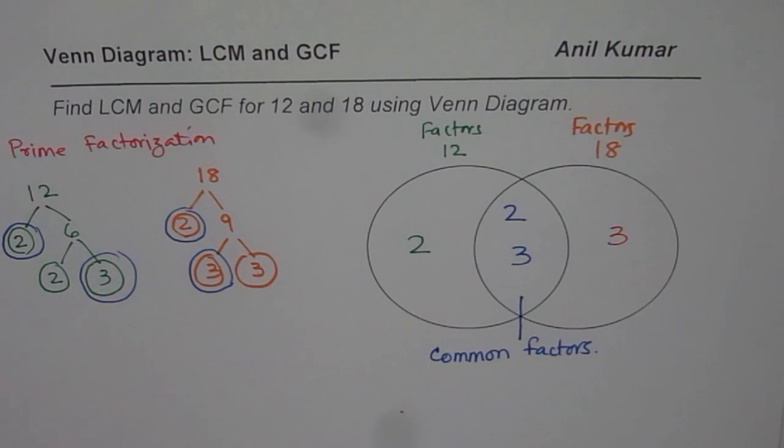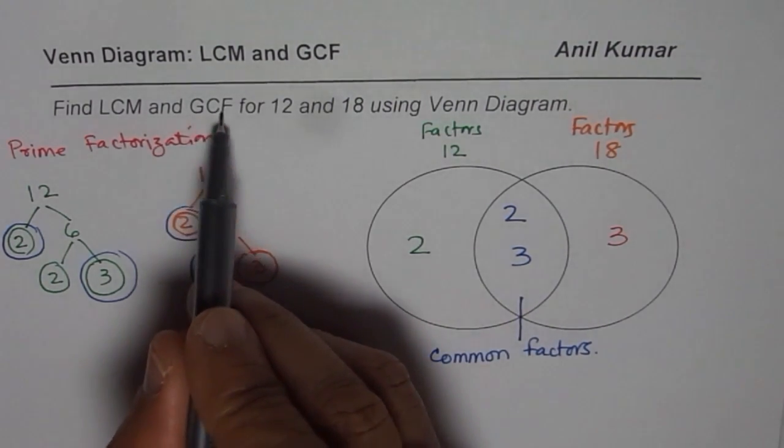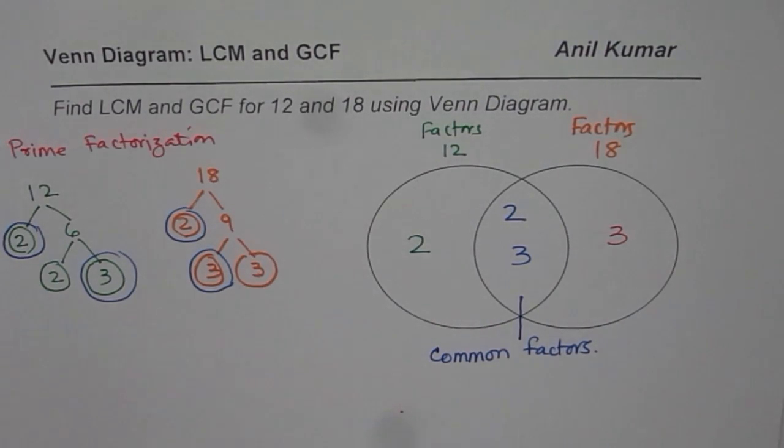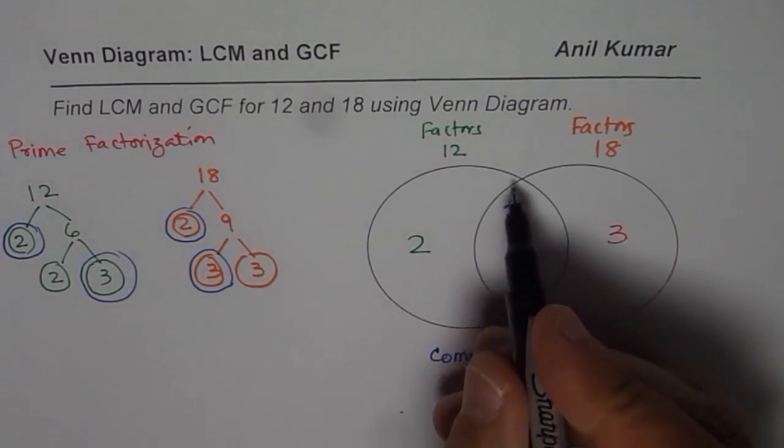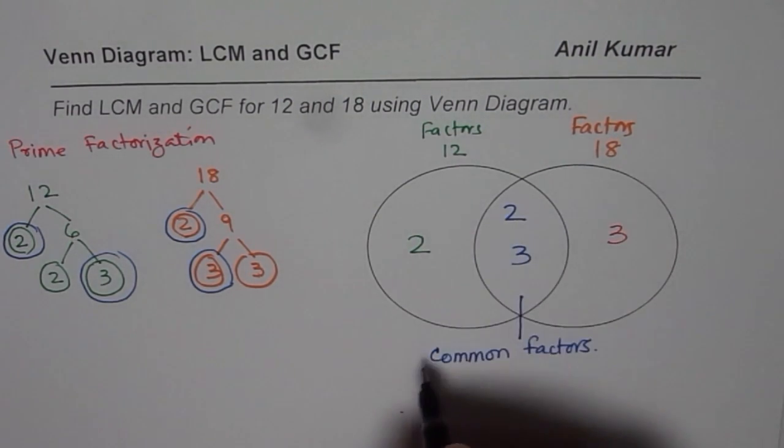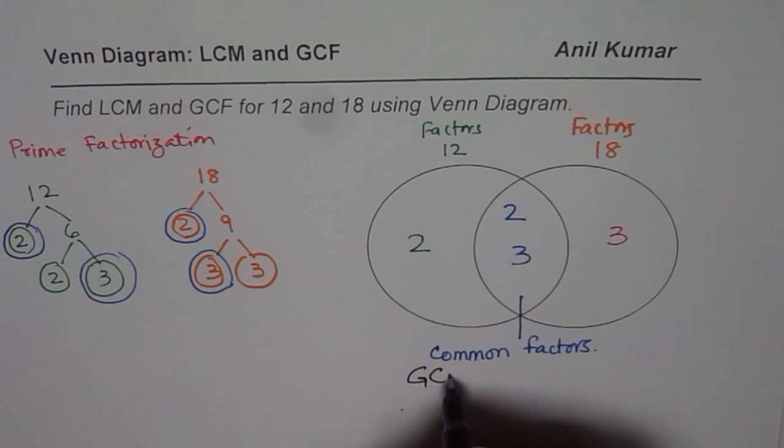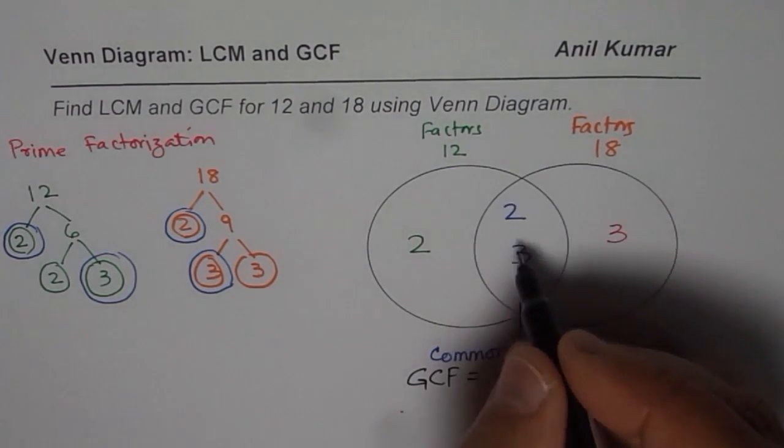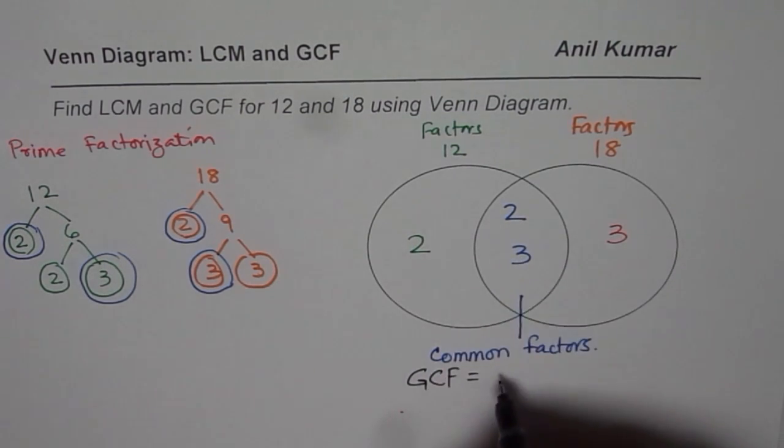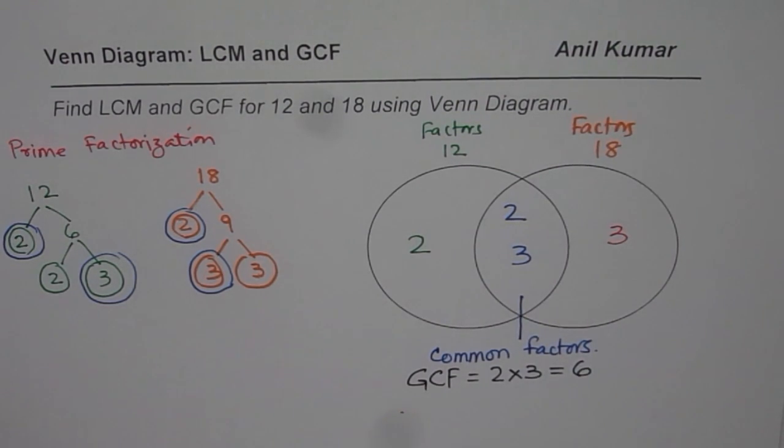Now from here we can straight away find greatest common factor. Now the greatest common factor is what? Amongst the common factors just multiply them all. So greatest common factor equals 2 times 3 which is 6 is your greatest common factor. So you just multiply them and get greatest common factor.